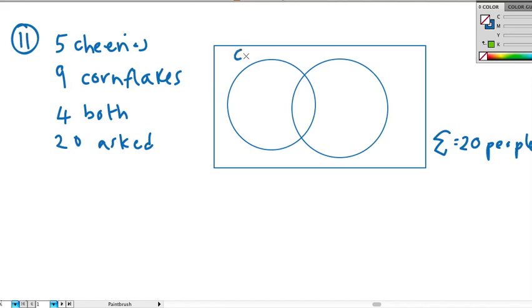So four liked both. Well, we've got to label it. If these are Cheerios and these are Corn Flakes, and we know that four liked both, we would put our four there. We know nine liked Corn Flakes. Well, nine are the people who were in this entire circle right here. So nine is everything. Well, we already have four. So the difference between nine and four is five. Nine liked Corn Flakes. Well, we already have the four. So let's take that away. So five people liked Corn Flakes only. These four liked Corn Flakes and Cheerios. And over here for Cheerios, we know five liked Cheerios.